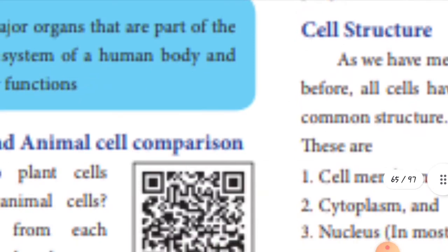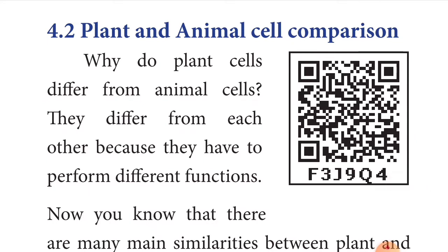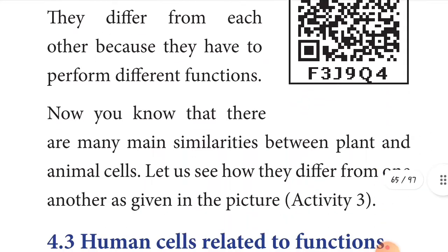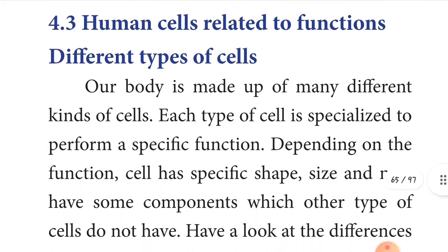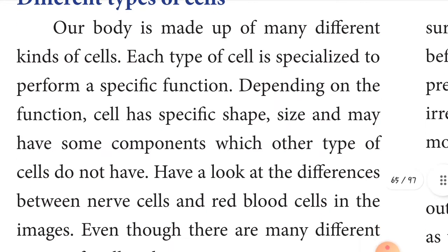Now let's move to plant and animal cell comparison. Why do plants differ from animal cells? They differ because of how they perform different functions. There are many similarities between plant and animal cells. In the human body, our body is made up of many different kinds of cells, each specialized to perform specific functions. Depending on the function, a cell has a specific shape, size, and components.